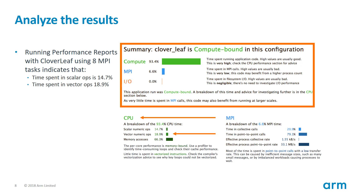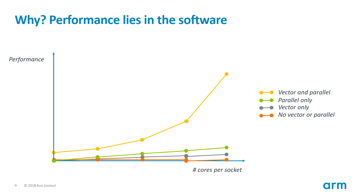Before doing that, let's pause to understand why vectorization is so important. CPU designs now incorporate an increasing number of cores rather than increasing clock frequency. As a result, if your code doesn't take advantage of vectorization or parallelism, upgrading the hardware won't give any performance improvement. It is only by modernizing your code to use vectorization or parallelism that you will get performance. Using both vectorization and parallelism will enable you to fully use all the potential performance of modern CPUs.